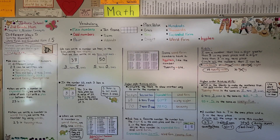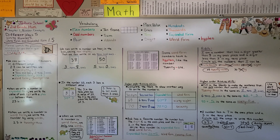Remember: in expanded form there's a plus sign between the values, and in word form, if a two-digit number ends with a one through nine, it's going to have a hyphen. Our next lesson, 1.6, we're going to talk about different names for numbers and more about tens and ones. Keep trying — I'm proud of you. Bye!